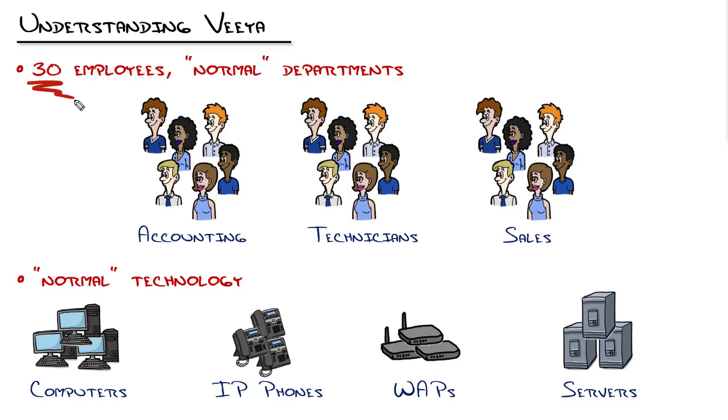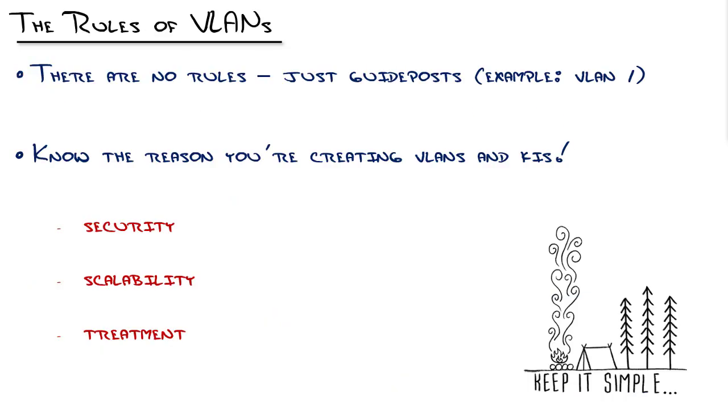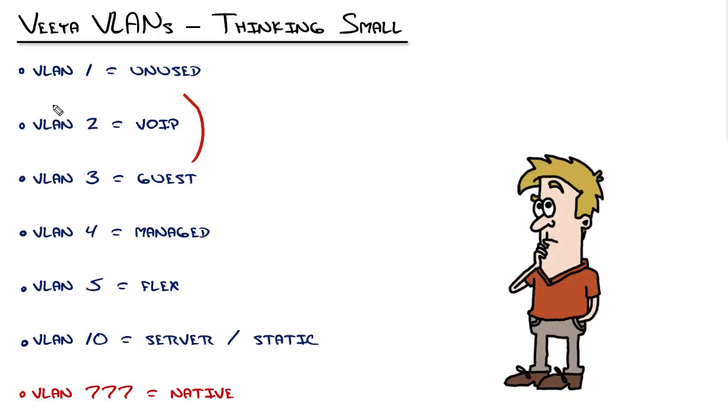However, thinking small does not position it for growth. Remember our three reasons for creating VLANs: security, scalability, and treatment. I want to give special attention to this one for a moment. Typically when you do subnetting, which by the way is going to be another topic that I have in this series, you'll usually do your subnetting in order and you'll use different subnet sizes based on whatever you want to accommodate for that VLAN.